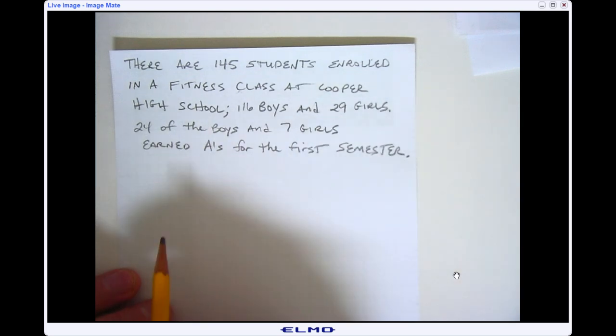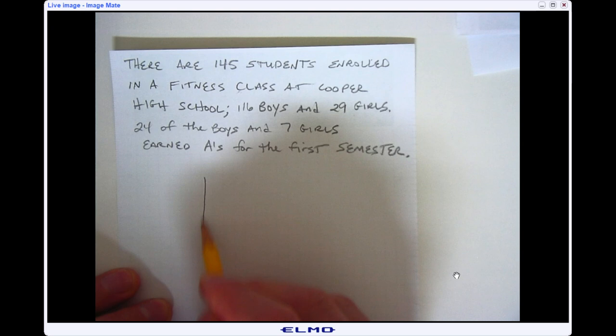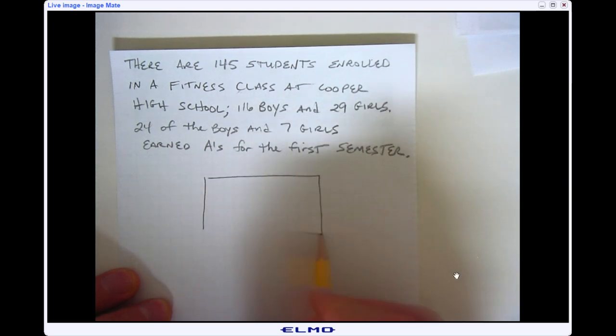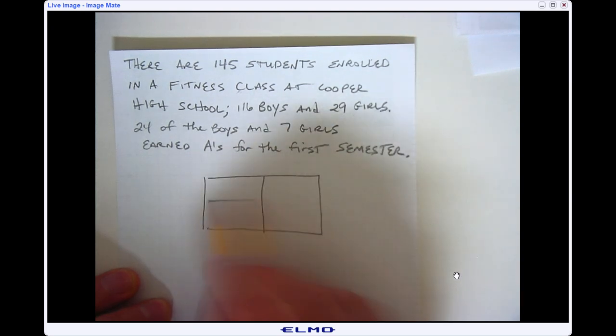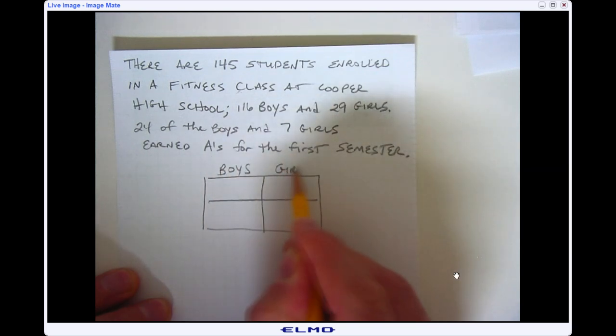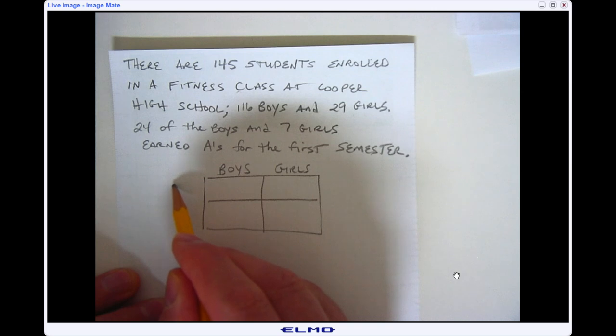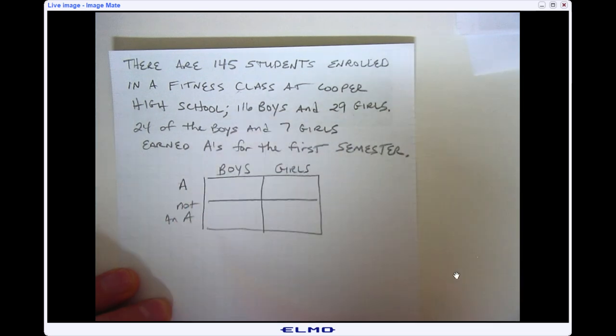So in this problem I'm talking about boys and girls, whether they got an A or not an A. When I set this two-way table up I'm gonna label the top boys and girls, and on the side here I'm going to say we have an A or not an A as far as the grade goes.